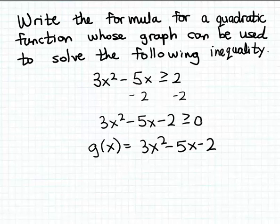That's the inequality 3x² - 5x - 2 ≥ 0, which is equivalent to our original inequality 3x² - 5x ≥ 2. So it's the graph of this function that can be used to solve the inequality that we want to solve here.